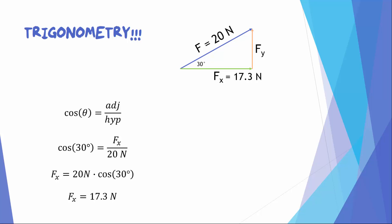Now for the vertical component. Fy is the opposite side to that 30 degrees, so we'll use the sine function where the sine of the angle theta equals the opposite side divided by the hypotenuse. We can substitute in the 30 degrees and the 20 N, cross multiply, and find that the vertical component equals 10 N.